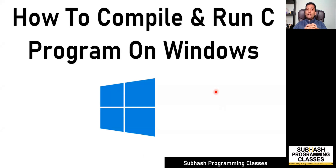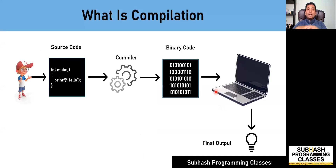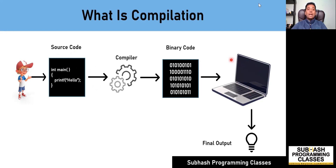Before starting to write, compile and run our C program, we must first understand what compilation means. So let's start this lesson with the question: what is compilation? The process of converting human understandable, English-like high level source code into computer understandable low level binary code is called compilation.